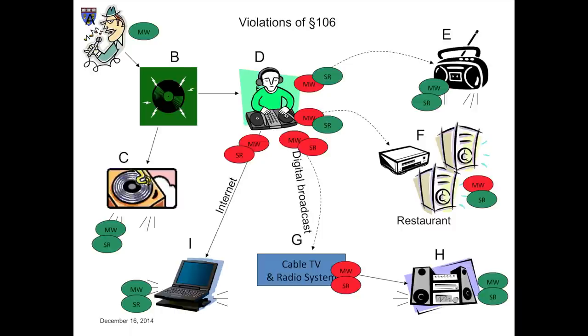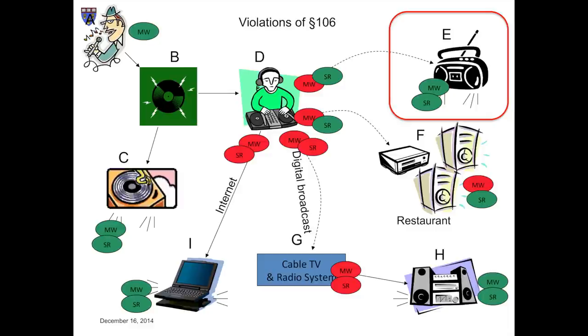This concludes our survey of the basics. Now let's consider some refinements. Focus on the upper right-hand corner of the diagram. The way in which the music got into E's ears is that singer A sang the composition, record company B recorded A's rendition, radio station D played the record and broadcast the signal over the airwaves, and E's radio, located in her living room, picked up that signal and converted it into sound waves. If E listens to the music while alone in her living room, the two performances that occur within the red rectangle are surely not public. Now let's alter the facts slightly. Suppose that E's dining room is adjacent to her living room. She has a dinner party in the dining room, and the invitees are able to hear the music coming out of the radio.